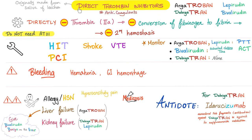These direct thrombin inhibitors were first isolated from the saliva of leeches. Imagine being a scientist who specializes in the saliva of leeches, trying to find a protein within that saliva that can inhibit secondary hemostasis. But this person did us a huge favor by discovering argatroban, dabigatran, lepirudin, and bivalirudin — because before this, HIT patients used to die from heparin-induced thrombocytopenia, which actually causes thrombosis.